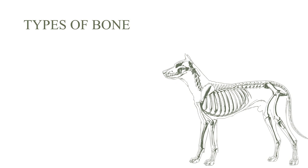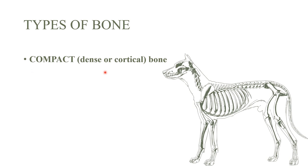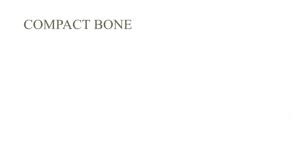Let's begin. Today we have bone terminology — what a bone is made of. The first part will be about compact bone, also called dense bone, and cancellous or spongy bone.